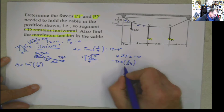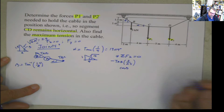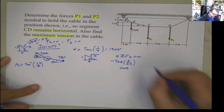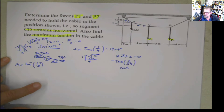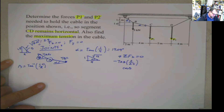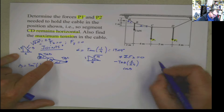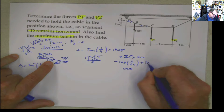Or I can say cosine beta if you feel more comfortable using angles. And then plus this component, which is going to be plus TBC in that direction.